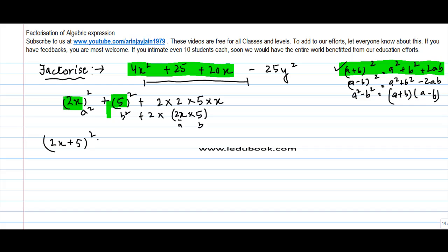It was this 25y square. Now 25y square can also be written as 5 into 5 into y square, or 5 squared into y square, which can be 5y whole square. So I get 5y whole square here.